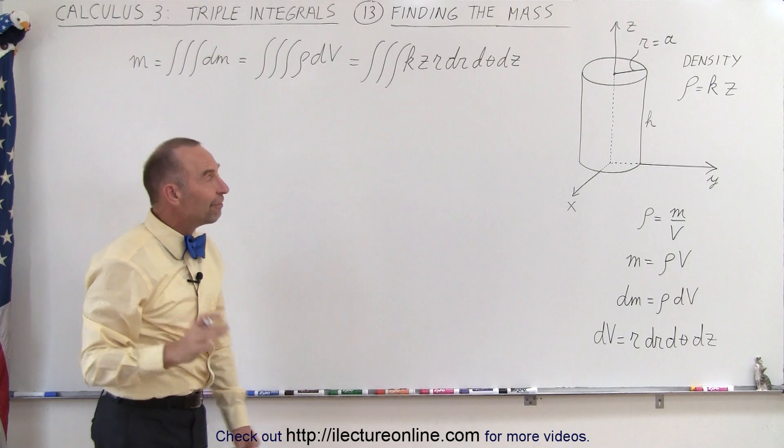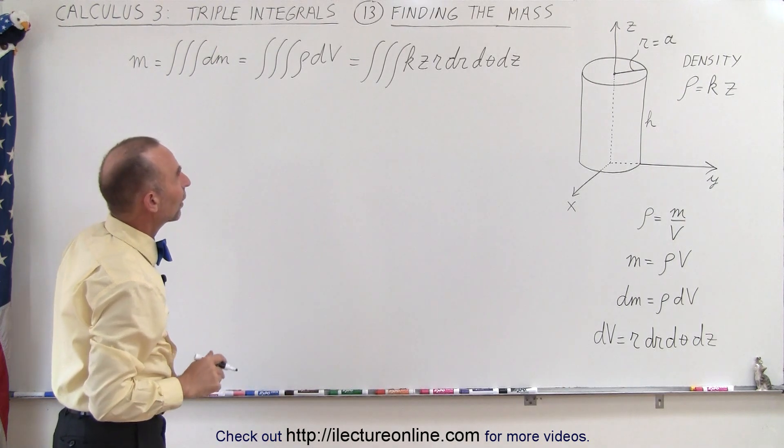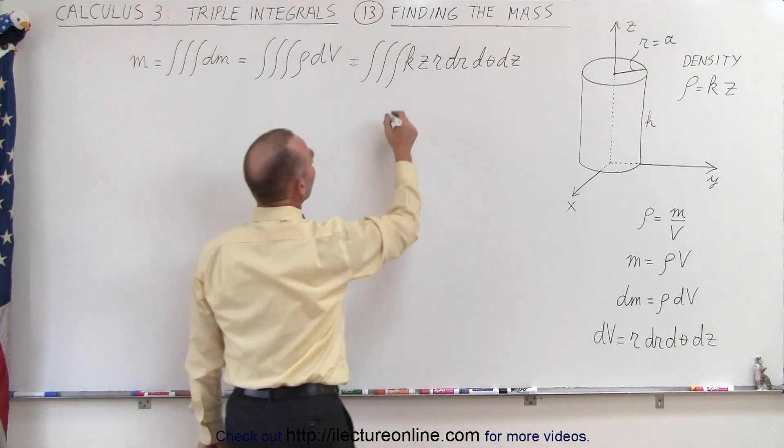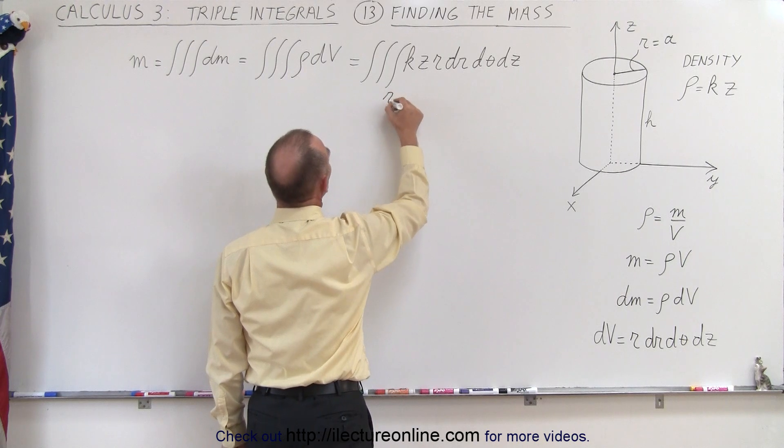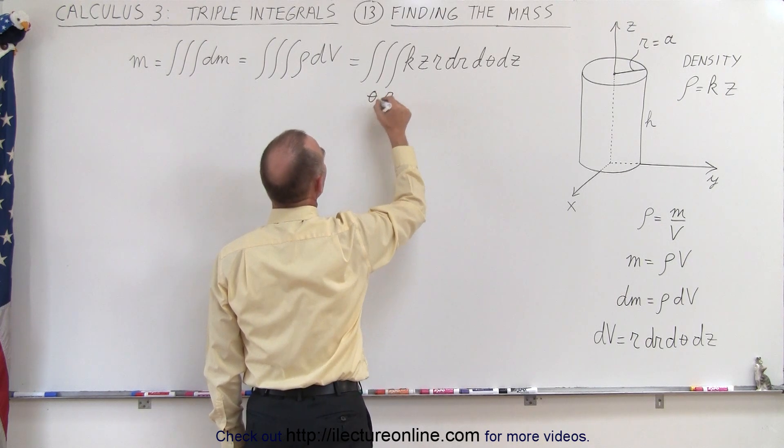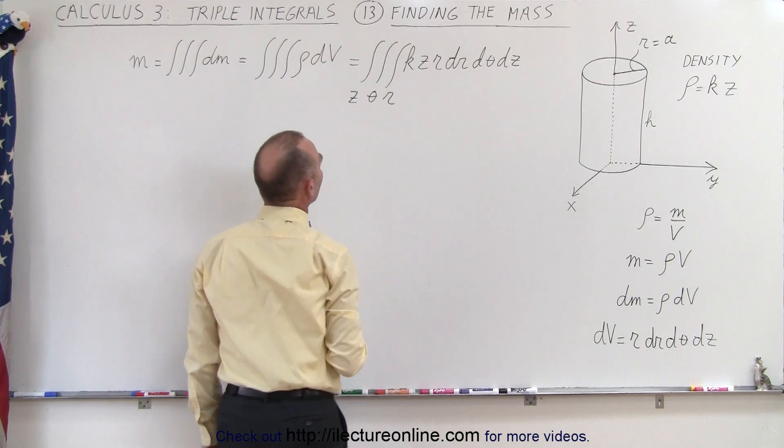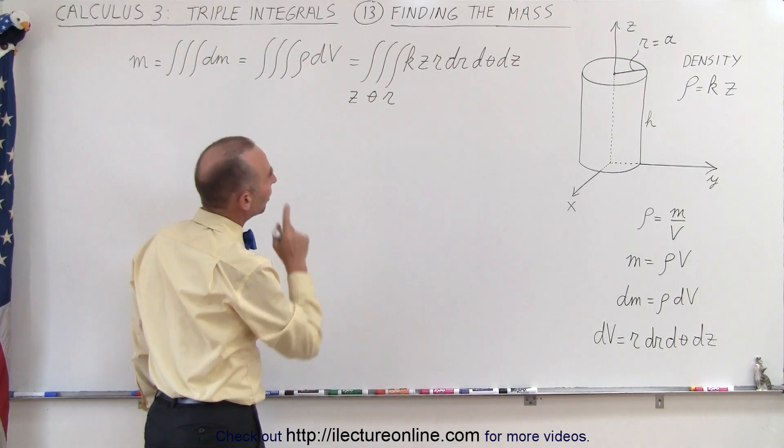Now it's all about finding the limits of integration. Notice we're going to integrate over r the radius, over the angle θ, and over z, so we'll find out what those limits are.